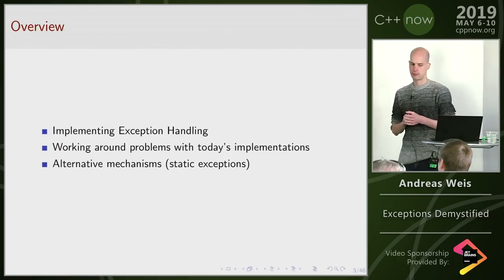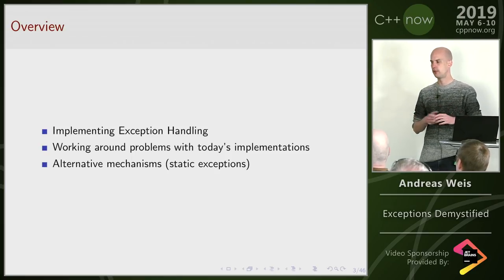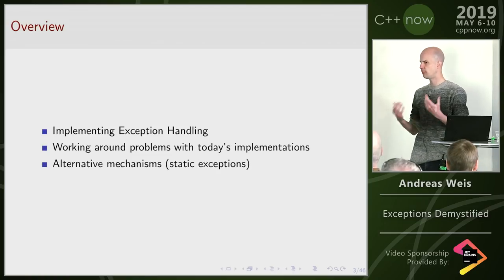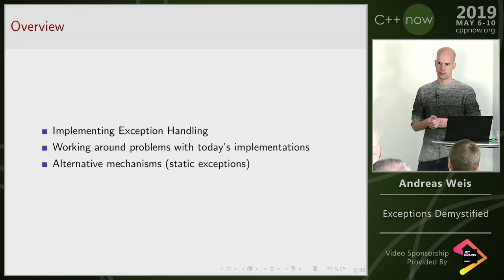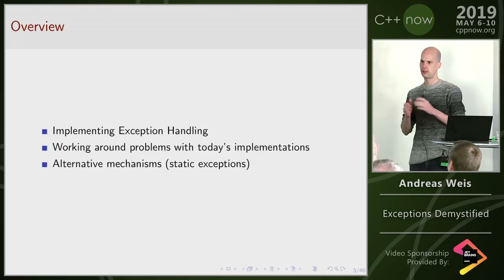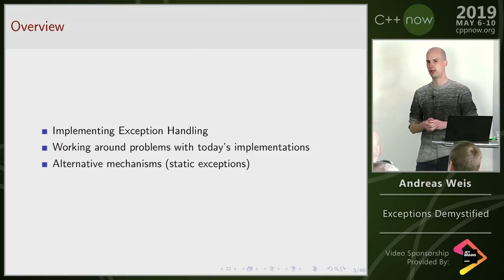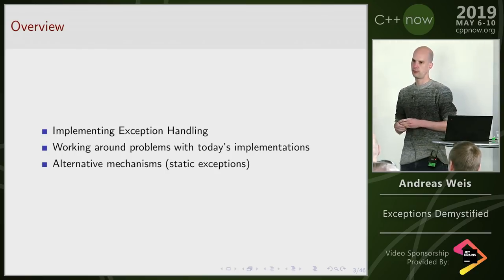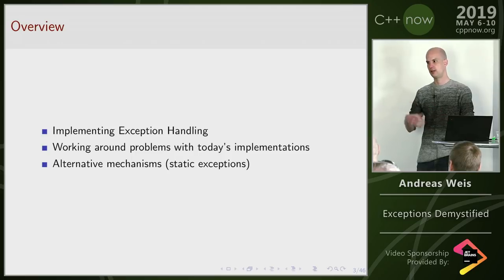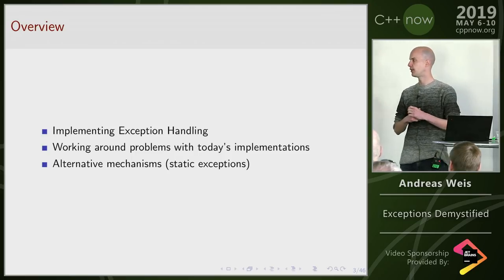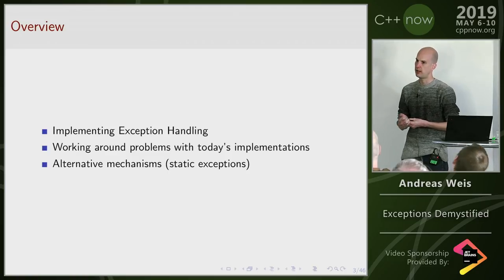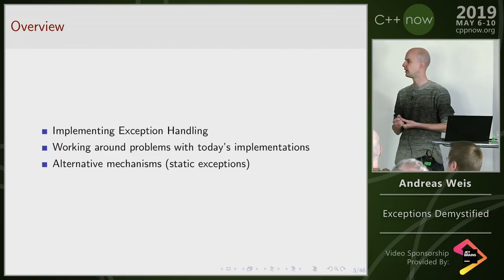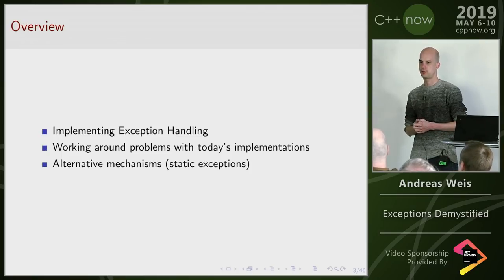What I want to talk about today: first, I want to give a rough overview of what it actually means to implement exception handling — how it works under the hood. I'm not going to go into too many specifics of particular implementations; it's more about what options exist if I wanted to write a compiler that supports exception handling. The goal is that by the end of this section everyone will have a rough understanding of the options, so that in the second part we can discuss the problems people have with exception handling currently and what our options are for working around or fixing those problems.